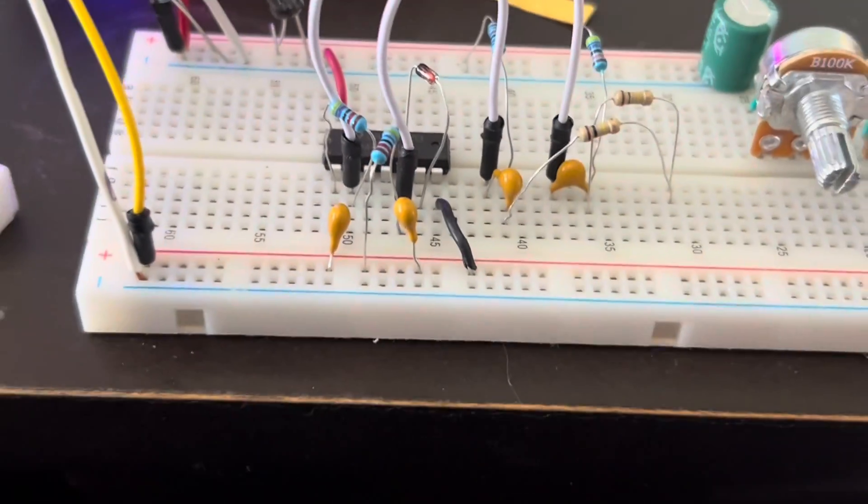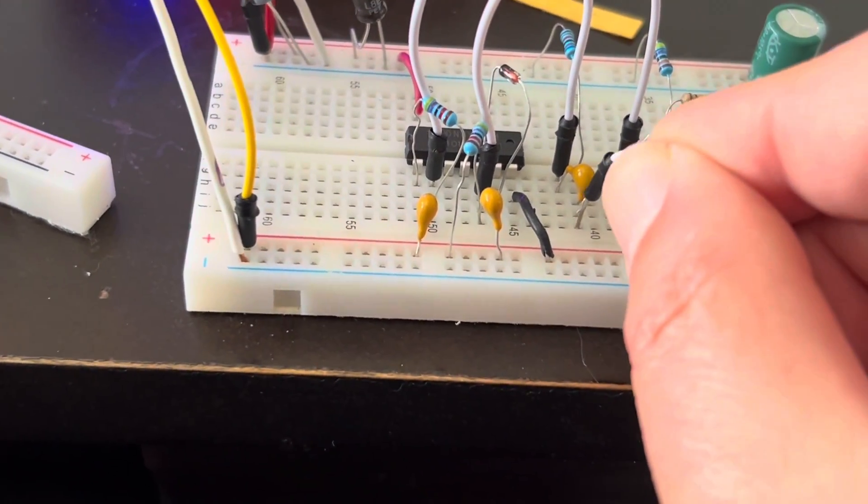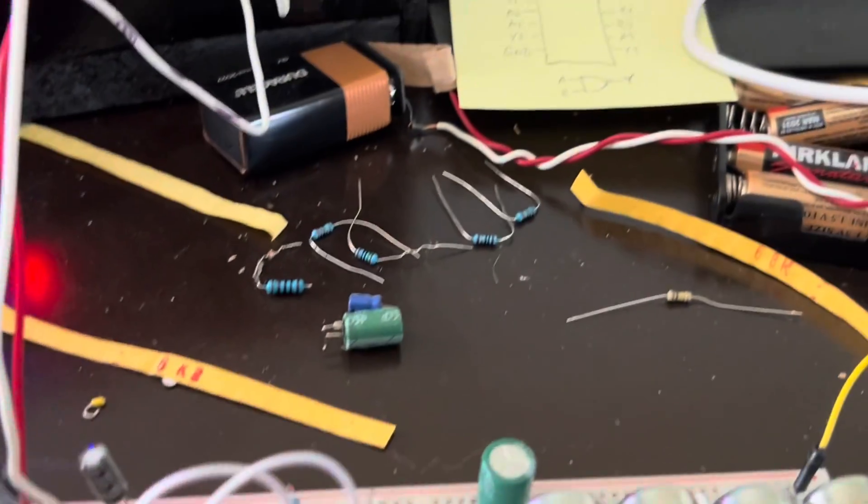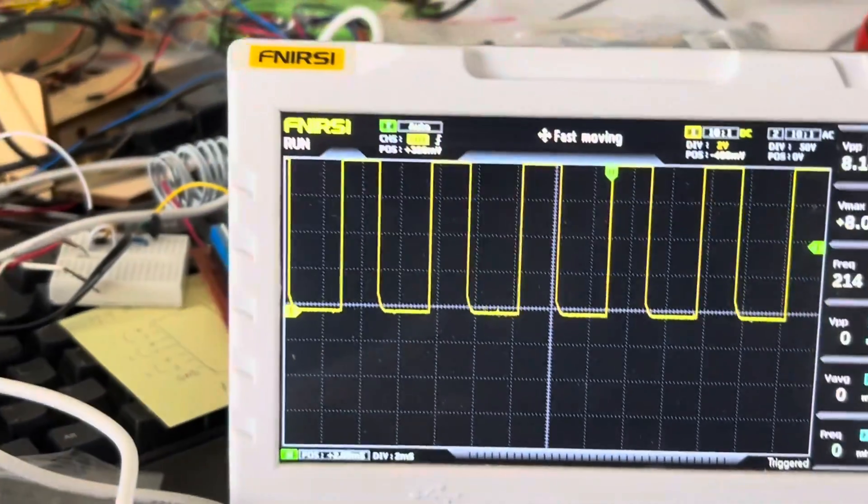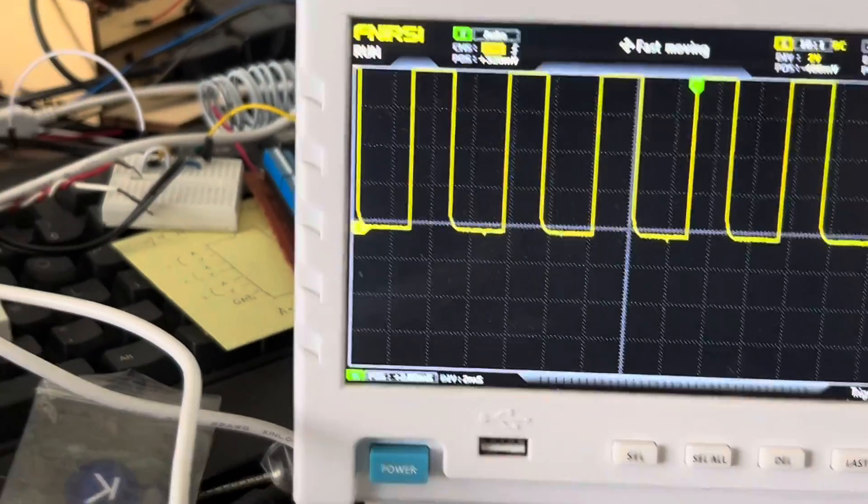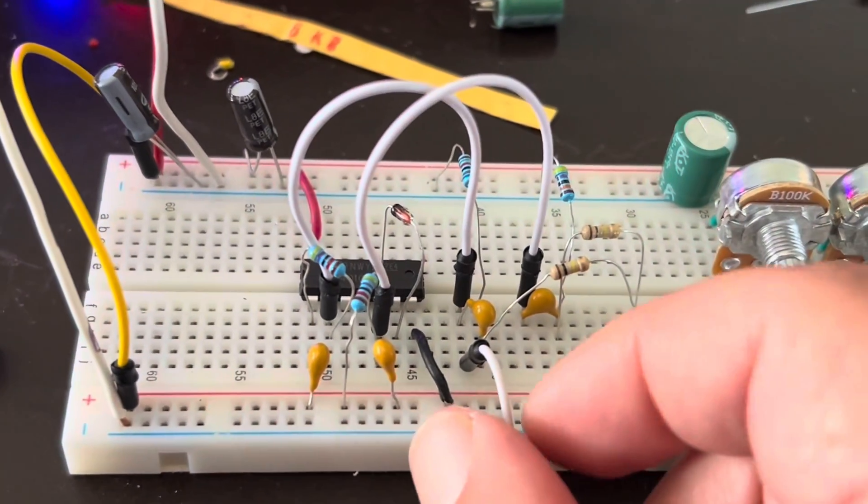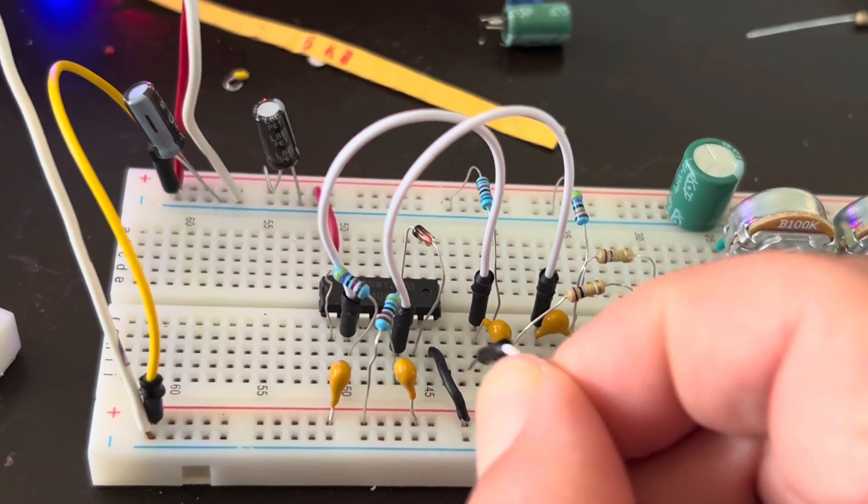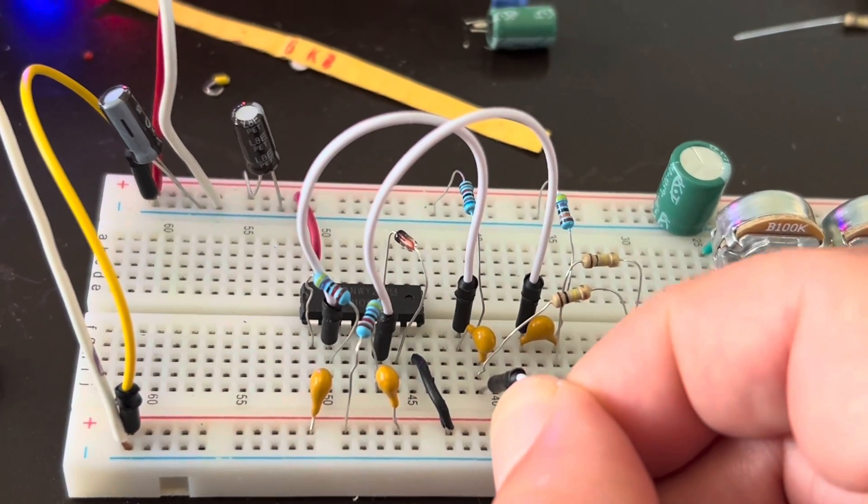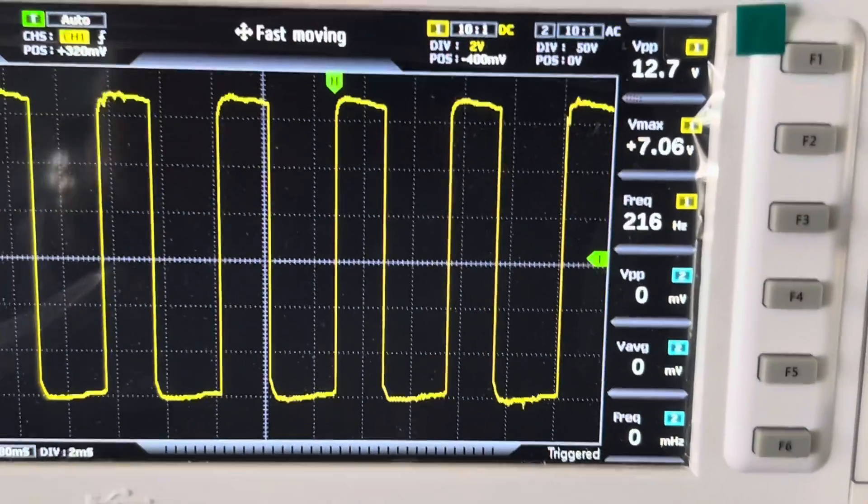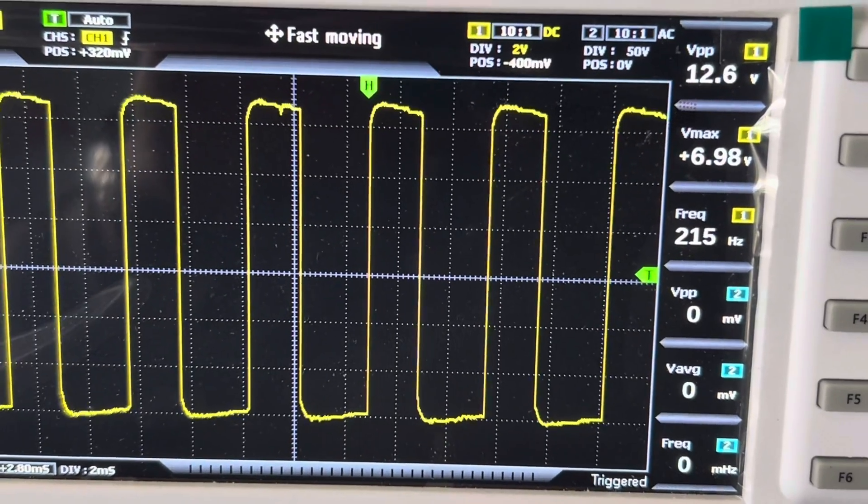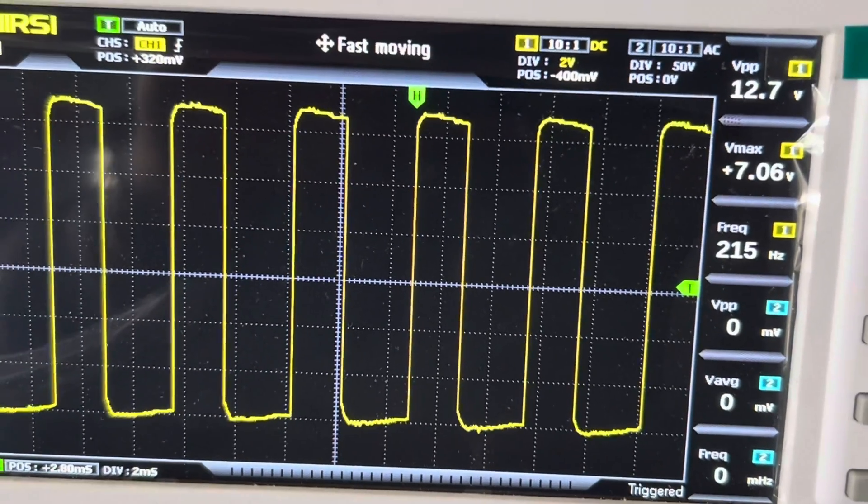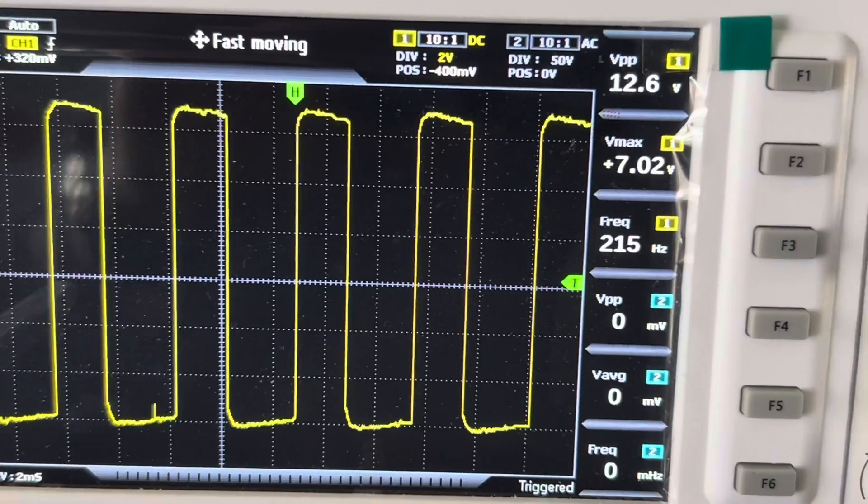So the first one, let's demonstrate that. That is right there. And that produces a square wave. When you run it through a capacitor to get rid of the DC offset, the output is right there. That gives you a 12.7 volt peak-to-peak square wave at 215 hertz.